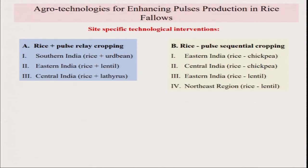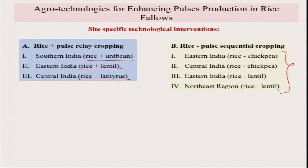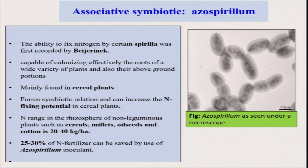There are different pulse production options — in southern India, rice plus urdbean; in eastern India, rice plus lentil; in central India, rice plus lathyrus. These change according to agro-climatic situations and farmer preference. In eastern India, people mostly prefer lentil as dal; in the middle part of India, pigeon pea is the preferred dal. You have to consider farmer choice and agro-climatic suitability of each crop before making recommendations. Different sequencing options: eastern India uses rice-chickpea, eastern India uses rice-lentil, and the northeastern region can also go for lentil.